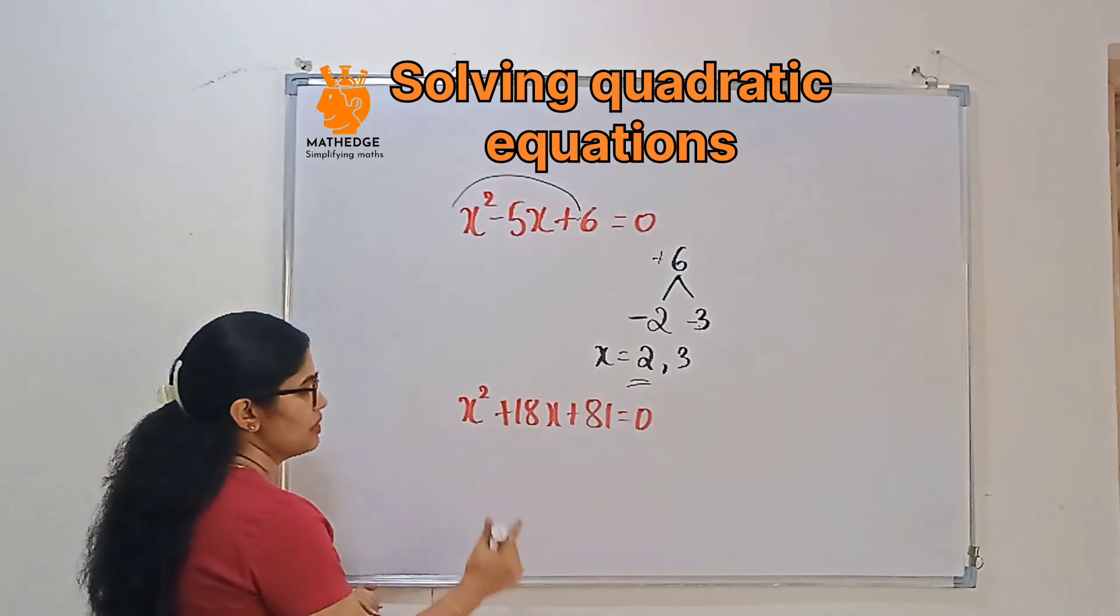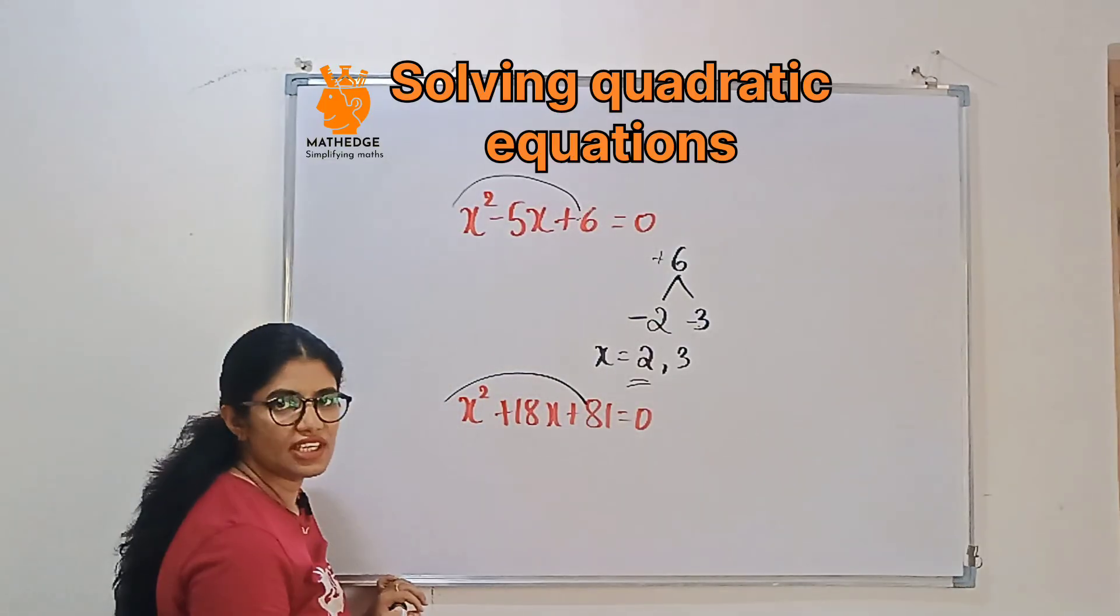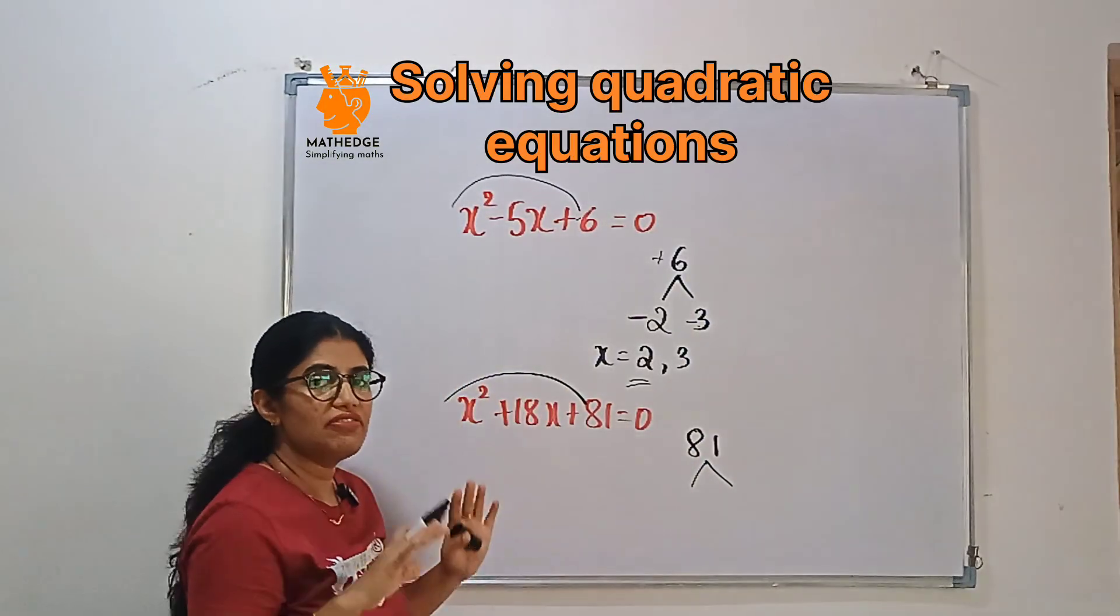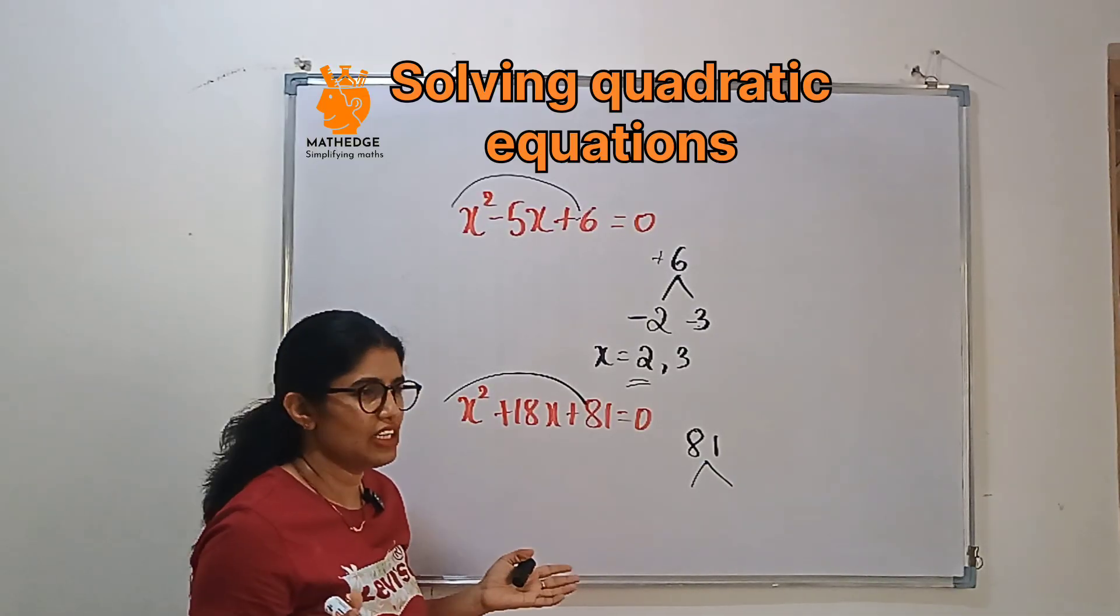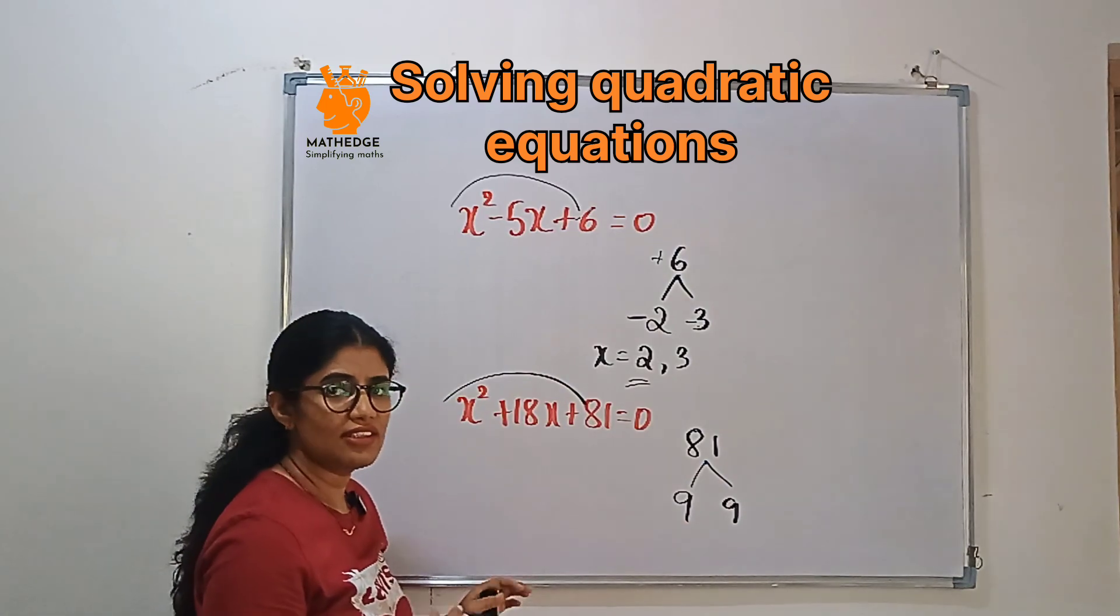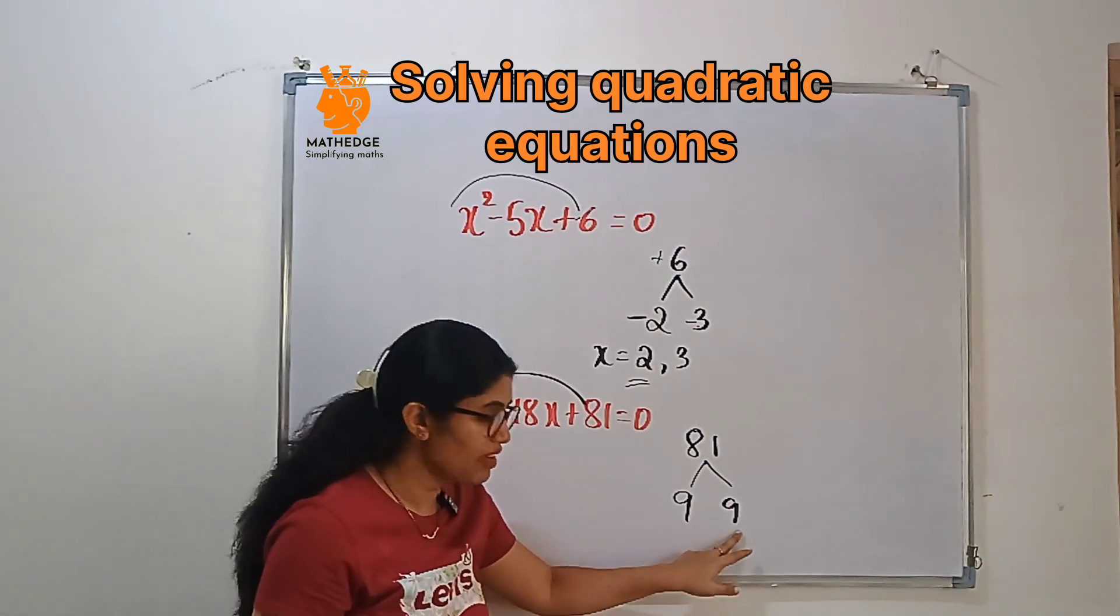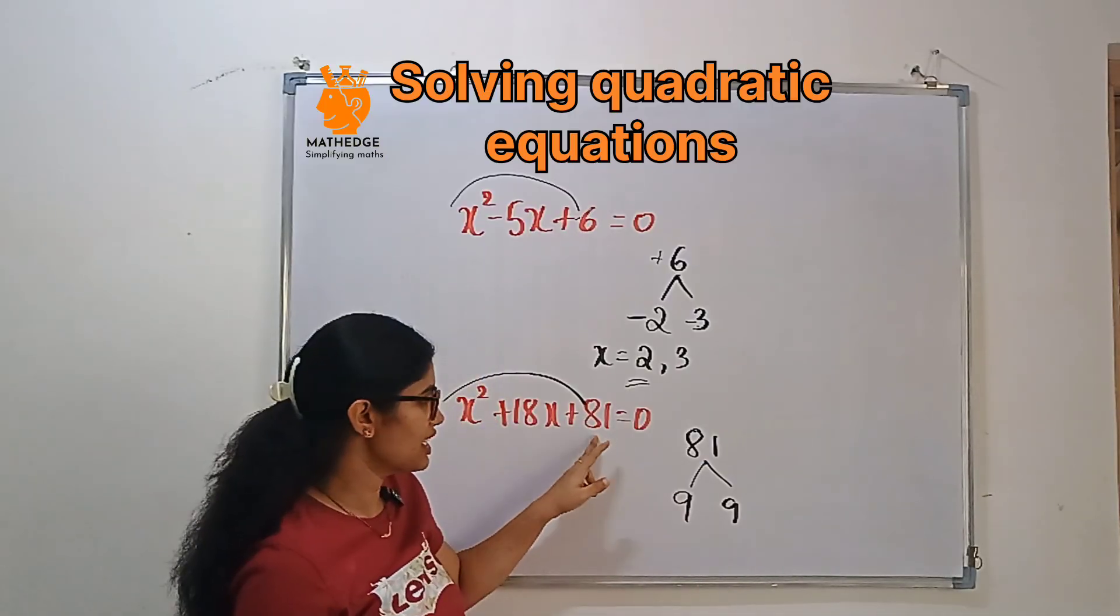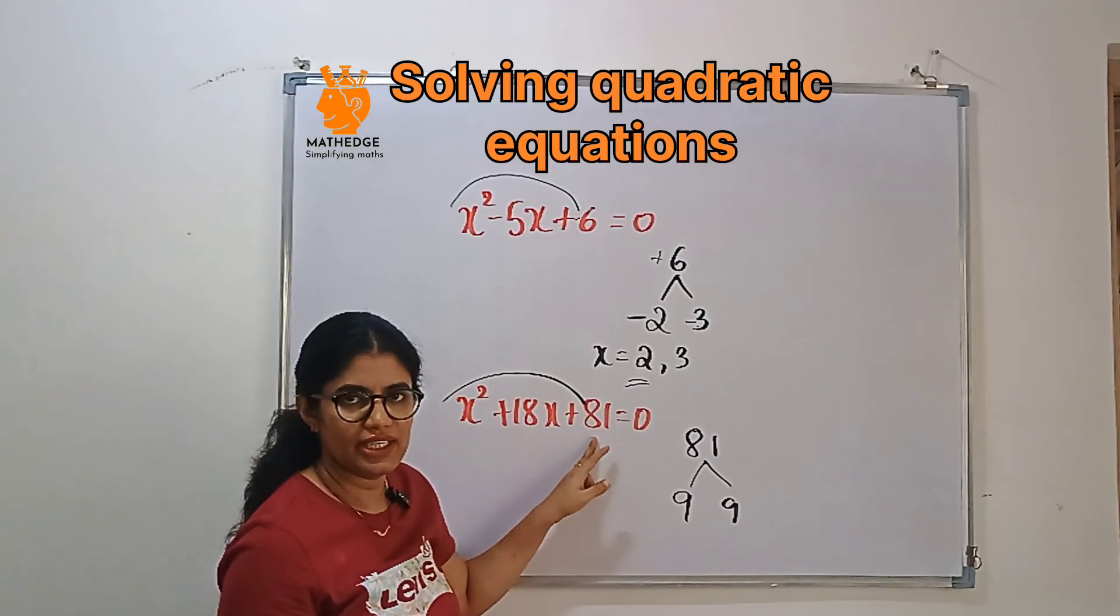Let us consider another example. So multiply the coefficient of first term and third term. So 81. Then look after the factors of 81. What are the factors of 81? 1, 81, 9 and 9. So how do we choose the factors? If you add these factors, we should get a middle term. If you multiply these factors, we should get the last term.